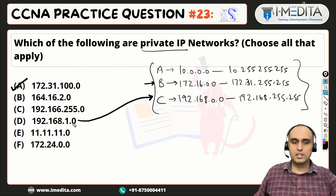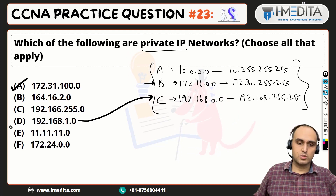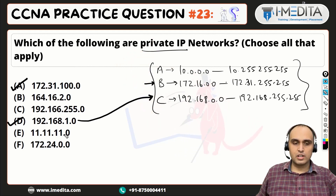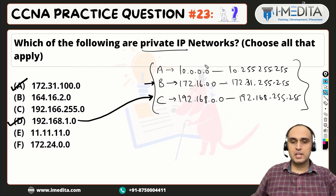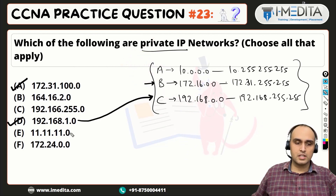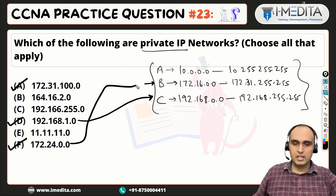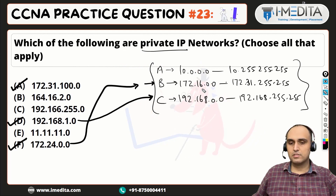Option D is 192.168.1.0, so D is also a valid option — it falls within the Class C private range. Then there is 11.11.11.0, which is a public IP — it is not in any private range. The last option is 172.24.0.0, which again falls within the Class B private range of 172.16.0.0 to 172.31.255.255.